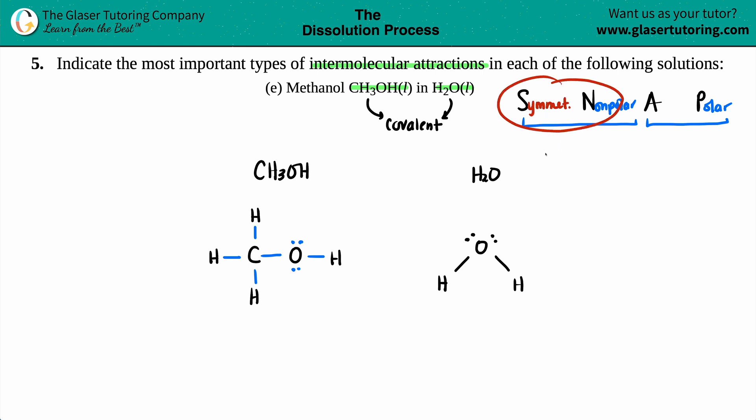If your molecule as a whole is symmetrical, it's classified as being nonpolar. But if your molecule is at least one point of being asymmetrical, that's a polar molecule. Remember, asymmetrical means different.